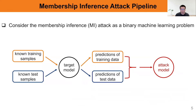To launch membership inference attacks, we can consider the problem as a binary classification. So the attack pipeline will be: first we have some known training and test samples, then we get the model predictions on those known samples. Based on the predictions, we learn the attack model, and finally we test the attack model on the unknown data samples.